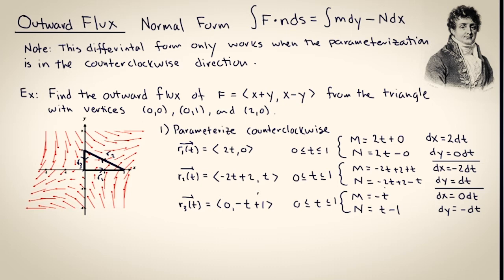Let's focus on the path R2, and just check that I've done the work correctly. M is x plus y, and n is x minus y. On the path R2, x is negative 2t plus 2, and y is t.